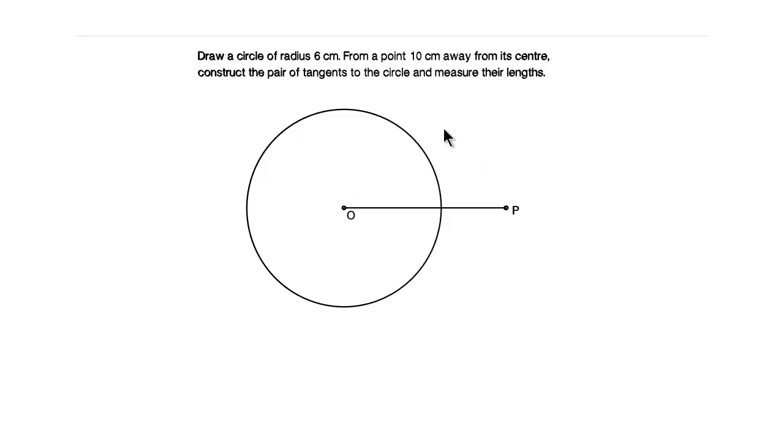So now we need to draw the perpendicular bisector. So you need to keep your compass at point O and you need to measure more than half of the distance of OP. Why I am telling you this? Because if you are going to take half or less than half of the distance OP of the line for which you want to draw the perpendicular bisector, then the arcs will not be intersecting. So if you want the arc to be intersecting and if you want the intersection point of the arc, then you need to always take the measurement more than half.